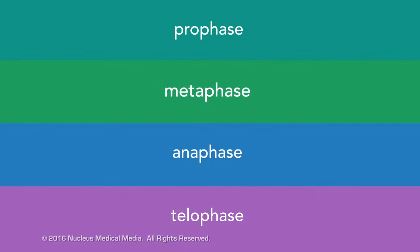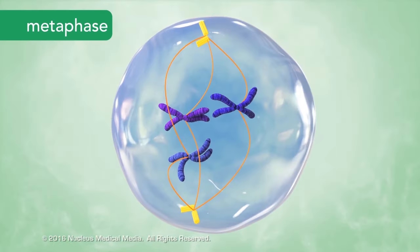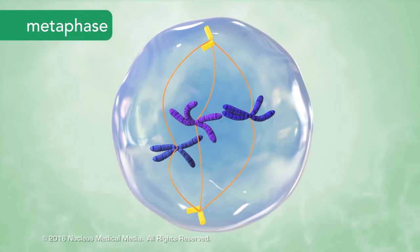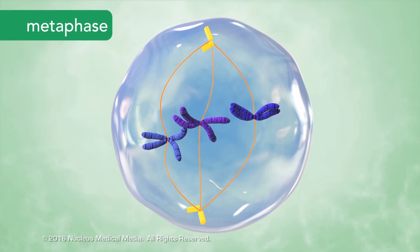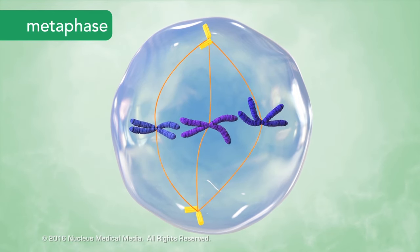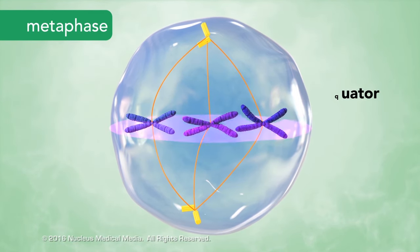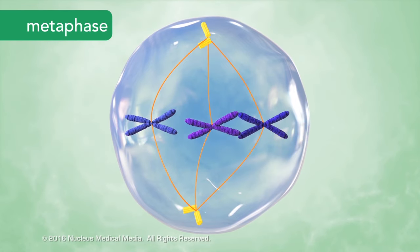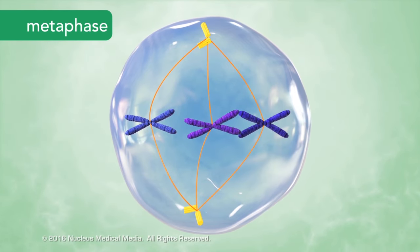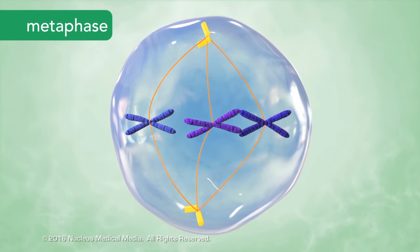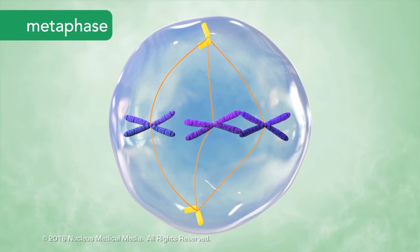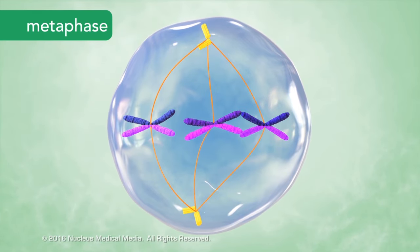Next, the cell enters metaphase. The centrioles complete their movement to the poles of the cell, while the spindle fibers line up the chromosomes along the equator of the cell. The end-to-end alignment of chromosomes results in a sister chromatid on either side of the equator.